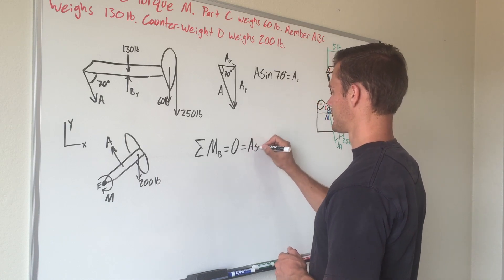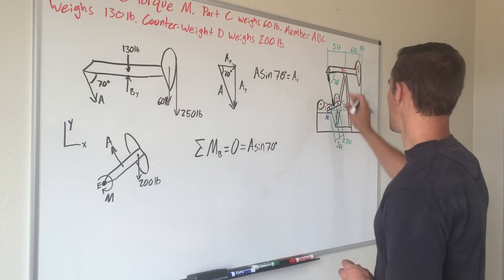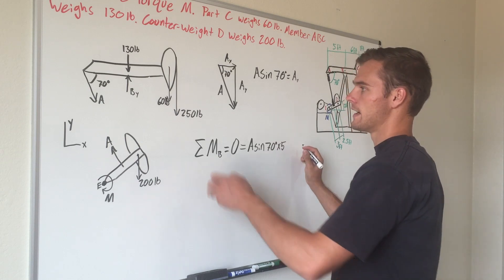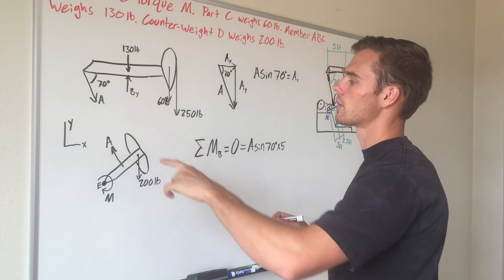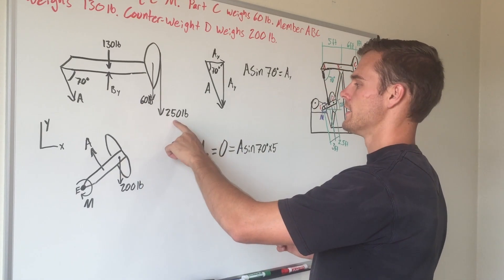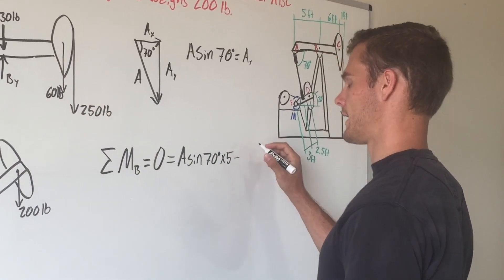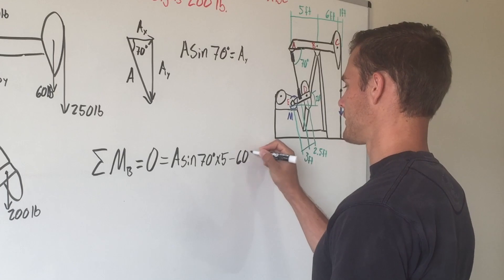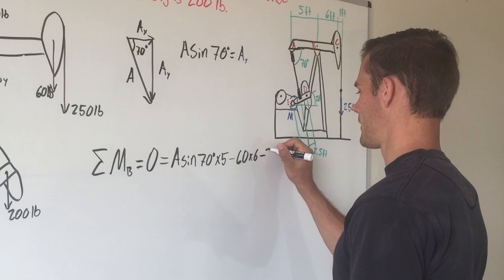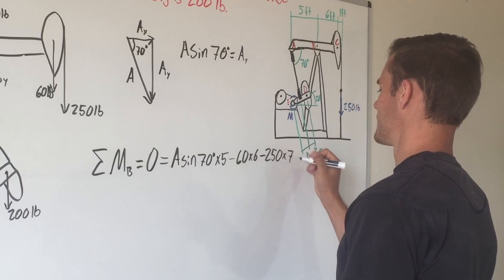So A sine of 70 degrees, and it is 5 feet away, so multiply by 5. Then you have your 60-pound force causing clockwise rotation and 250 pounds also causing clockwise rotation, so we'll say they're negative. You have 60 pounds, 6 feet away, so multiply by 6. Then minus 250, multiply by 7 because it's 7 feet away.